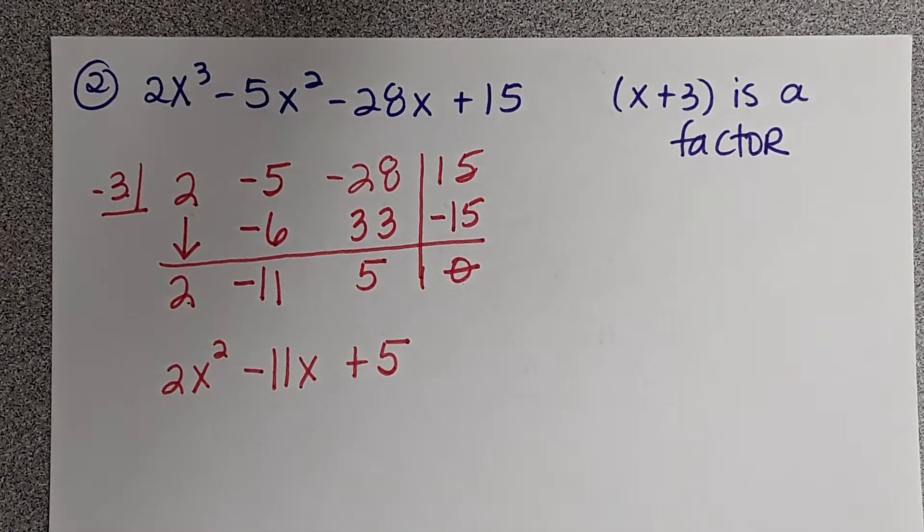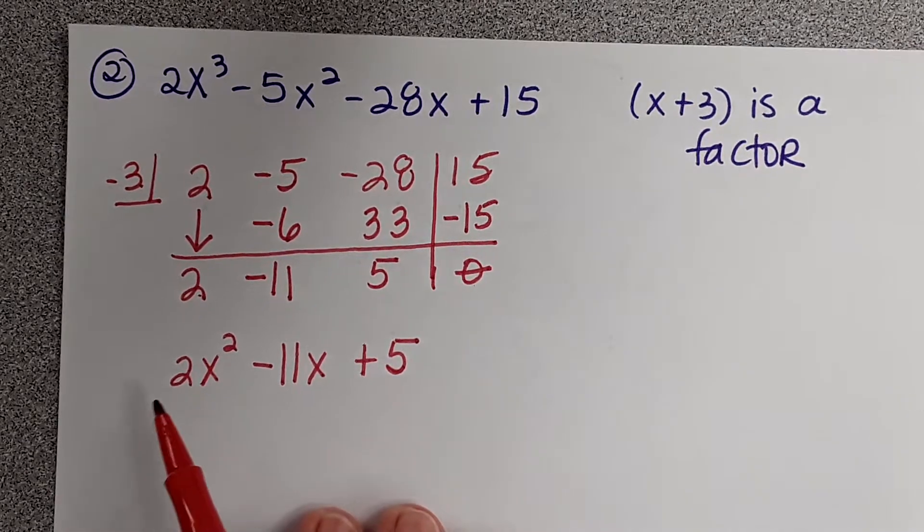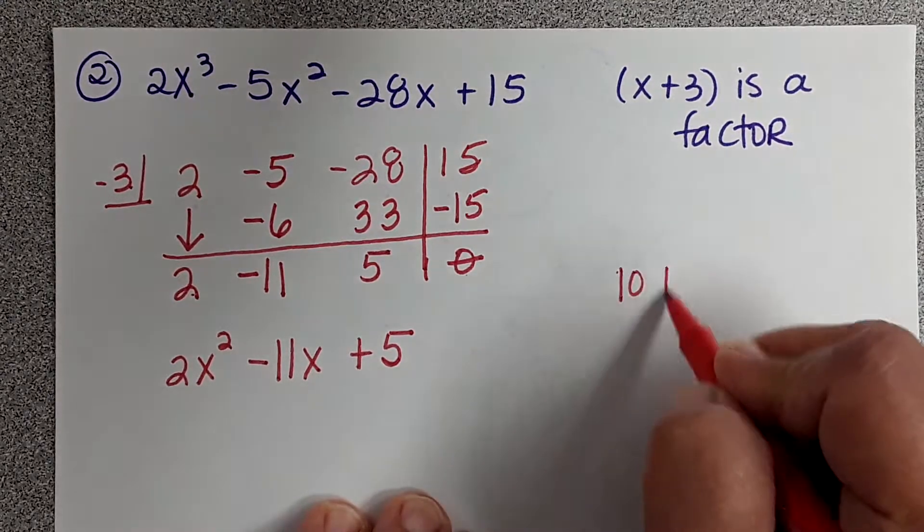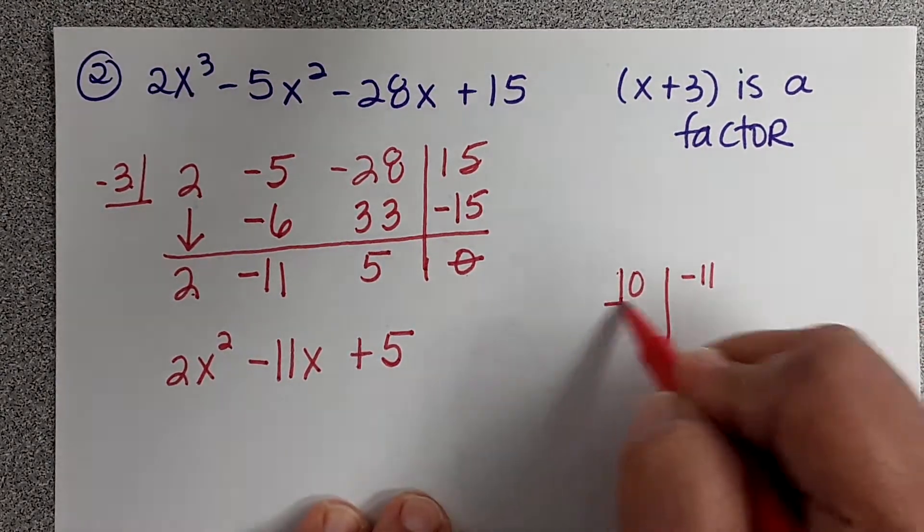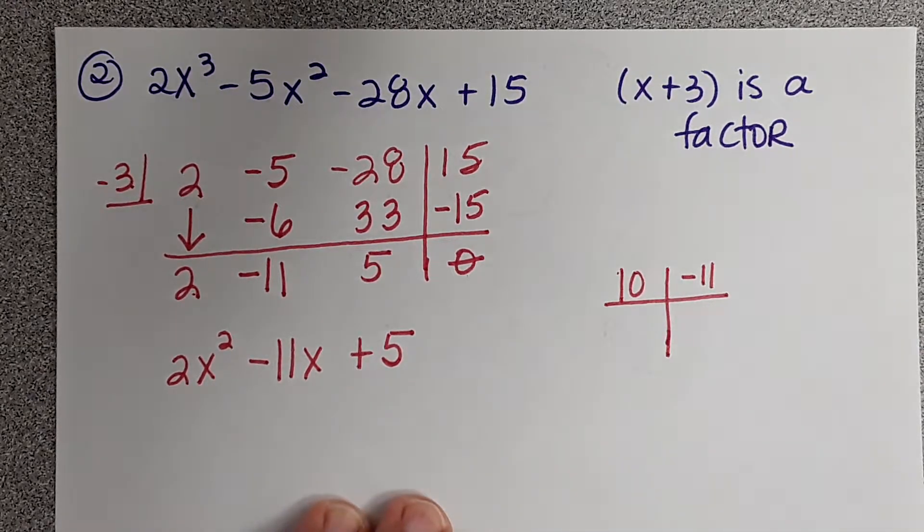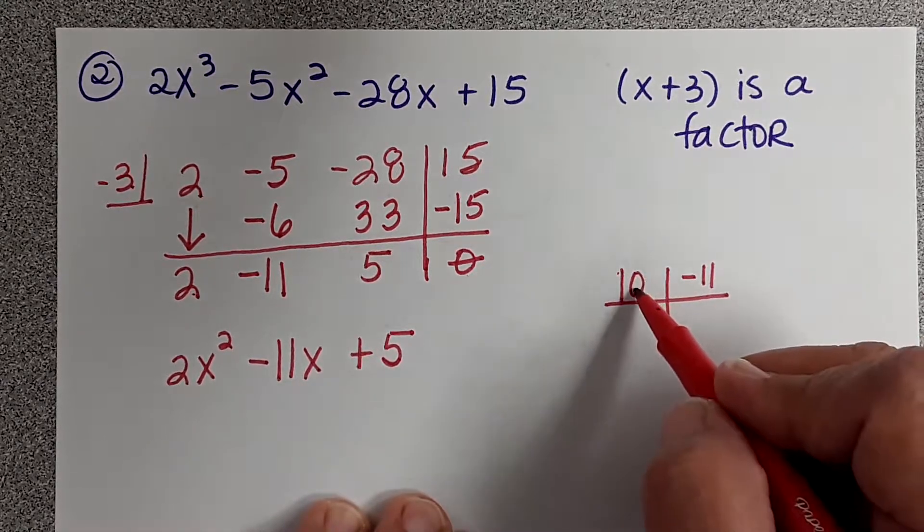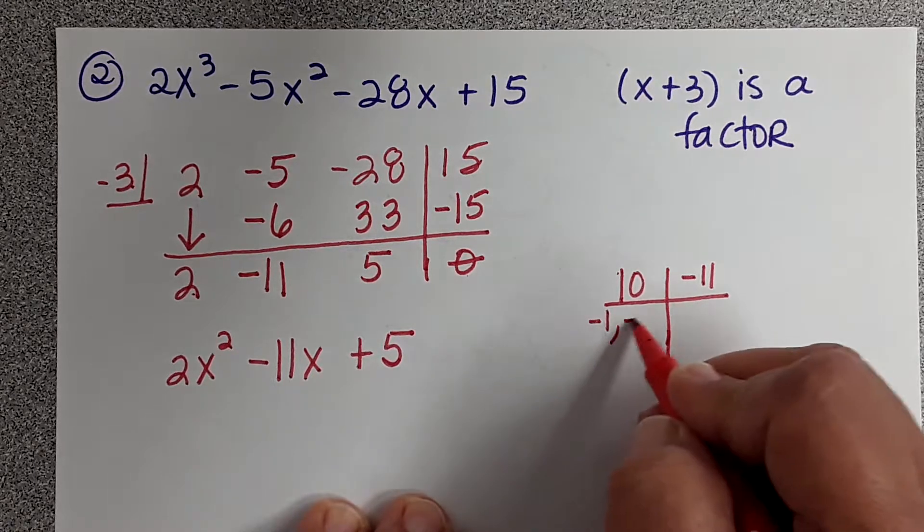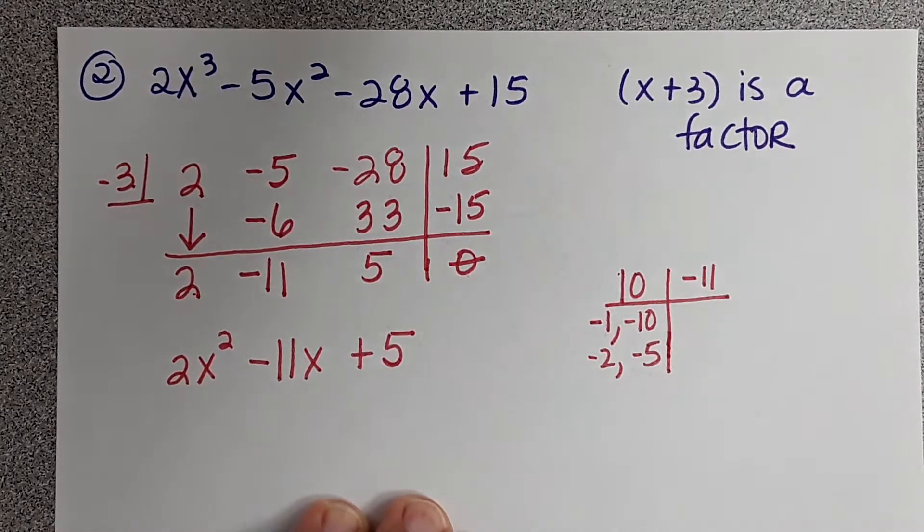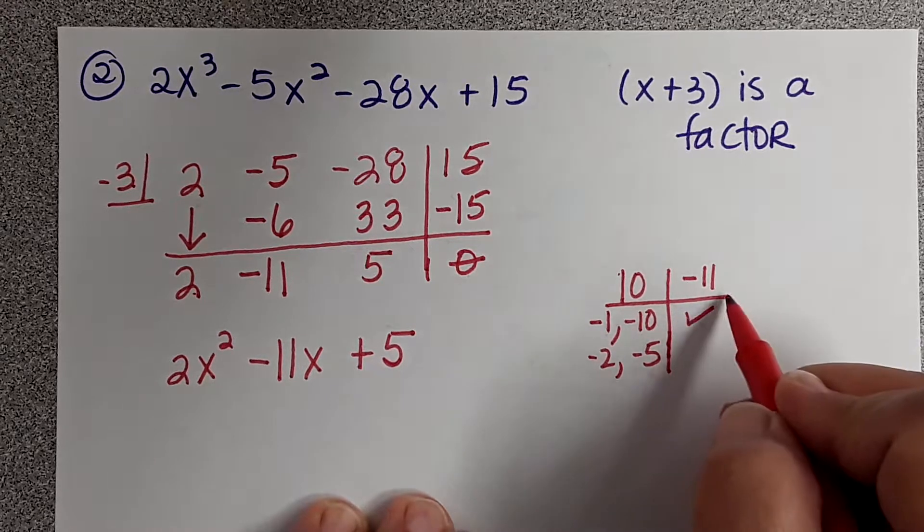So to factor those, you're going to multiply A times C, so 2 times 5 is 10, and I'm looking for 2 numbers that when I multiply them, I get 10. When I add them, I get negative 11. So since this number is positive and this number is negative, that means they both need to be negative. Which one adds up to negative 11? This one right here.